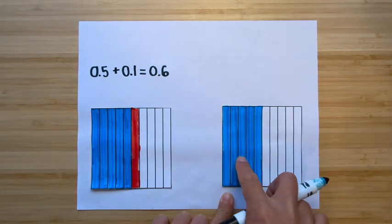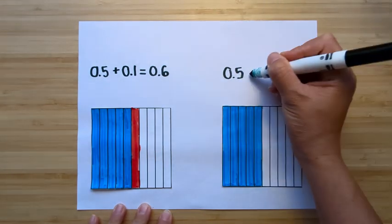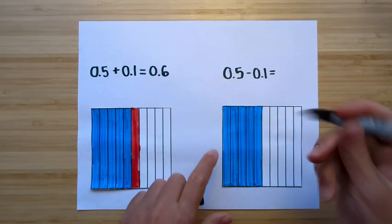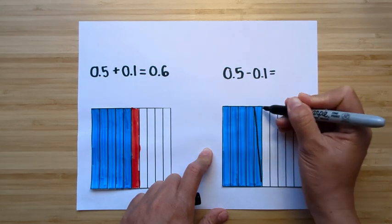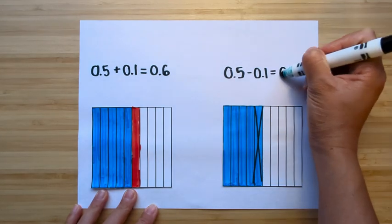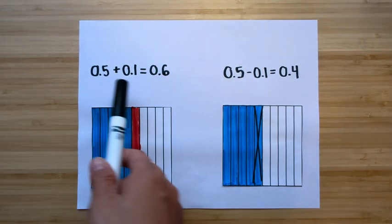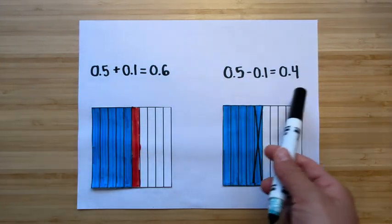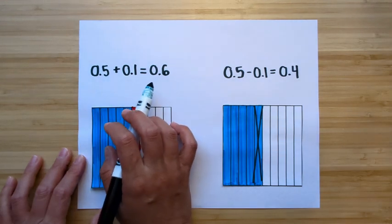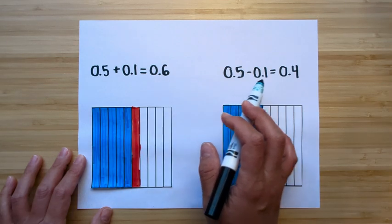Let's look at this one. We have five-tenths — same setup — but this time I want to take away one-tenth. Five-tenths minus one-tenth. I'll cross out one-tenth. Counting what's left: one-tenth, two-tenths, three-tenths, four-tenths. Five-tenths minus one-tenth is equal to four-tenths. If you ignore the decimals for a second: five plus one is six, five minus one is four. It's the same counting sequence, just a different place value. So: five-tenths plus one-tenth equals six-tenths; five-tenths minus one-tenth equals four-tenths.